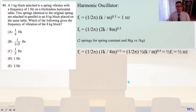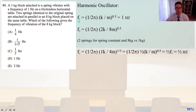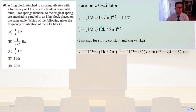Number 80: A 1-kilogram block attached to a spring vibrates with a frequency of 1 Hz on a frictionless horizontal table. Two springs identical to the original spring are attached in parallel to an 8-kilogram block placed on the same table. Which of the following gives the frequency of vibration of the 8-kilogram block? The harmonic oscillator frequency F1 equals one over 2pi times the square root of K over M, which equals 1 Hz. F2 equals one over 2pi times the square root of 2K over 8M, since the two parallel springs give effective spring constant 2K and the mass is 8 times larger.